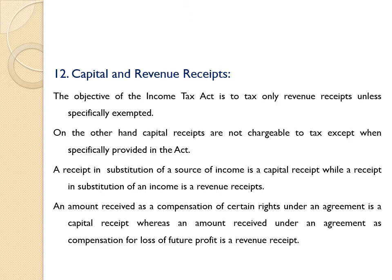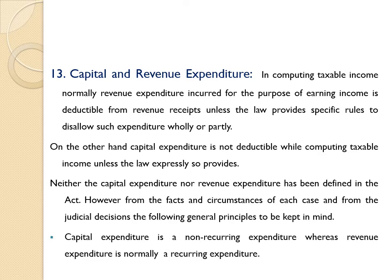An amount received as compensation for certain rights under an agreement is a capital receipt. That is very important — amount received as compensation because of transfer of our rights to another party is a capital receipt. An amount received under an agreement as compensation for loss of future profit is a revenue receipt. In summary, capital receipt arises due to transfer of our rights and revenue receipt arises due to loss of future profit.